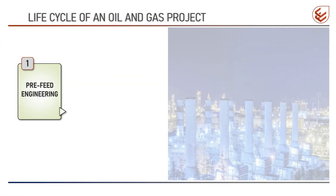Now let's have a look at the life cycle of an oil and gas project. Oil and gas projects are completed in seven phases with a minimum of two gate approvals.